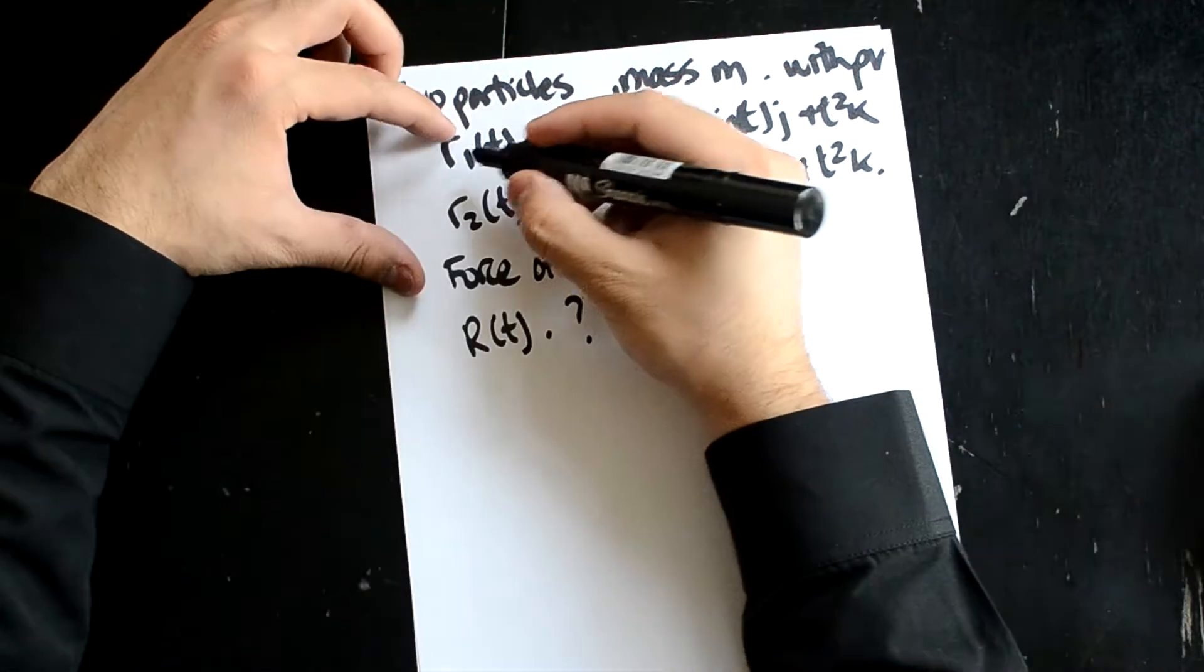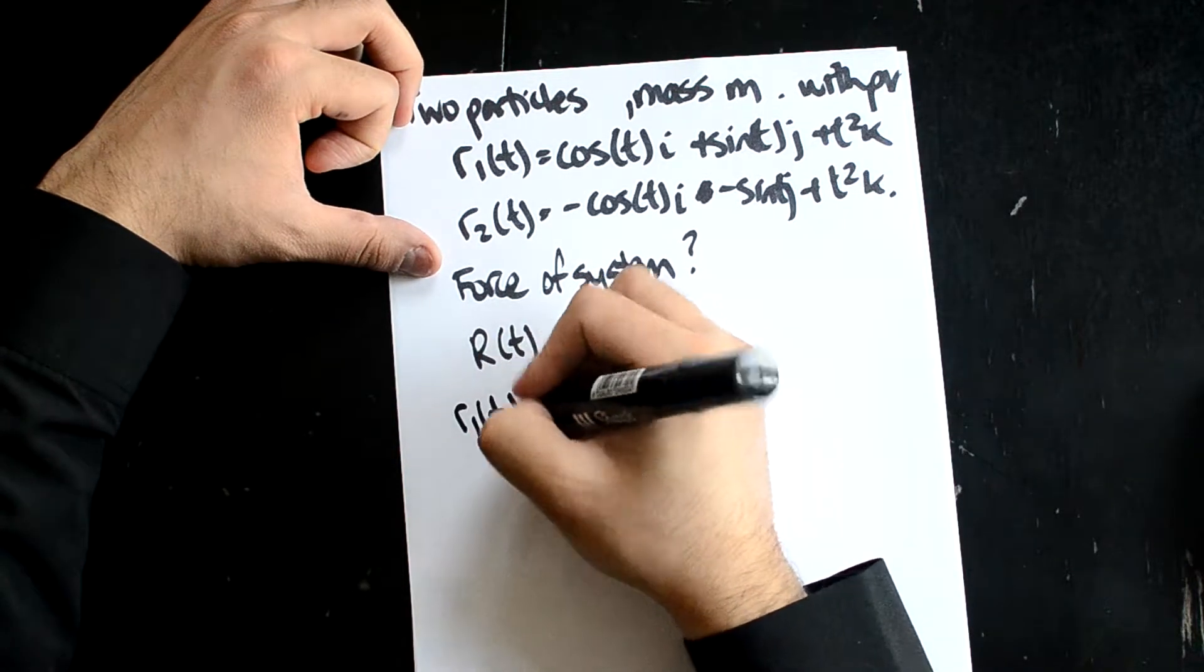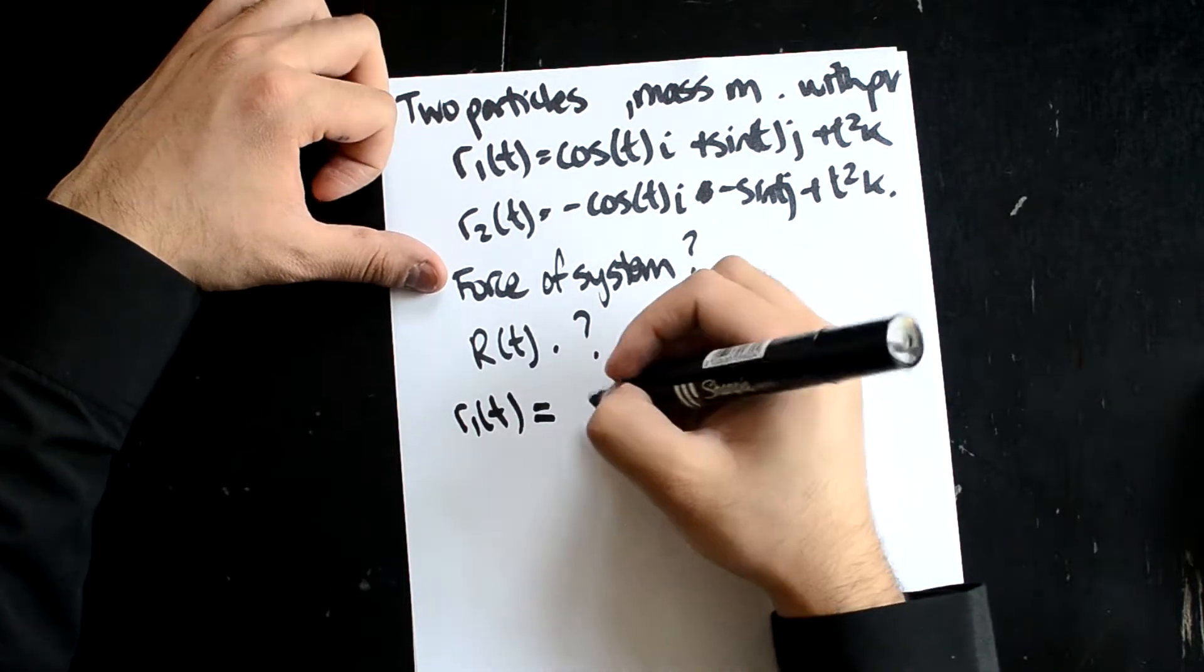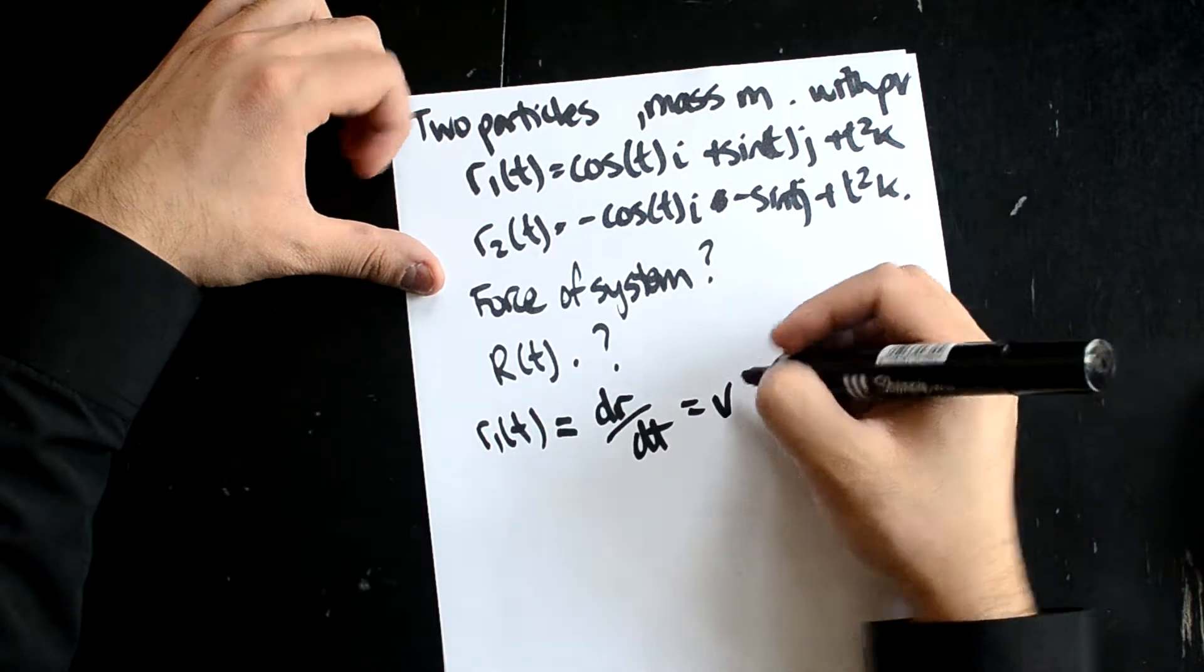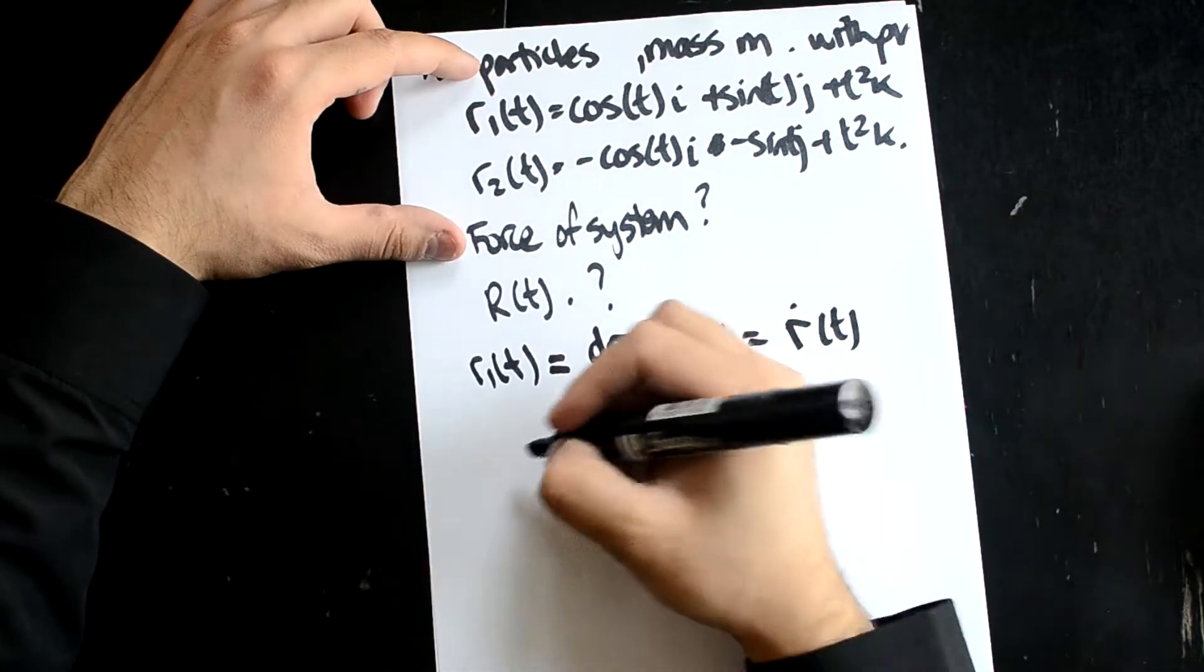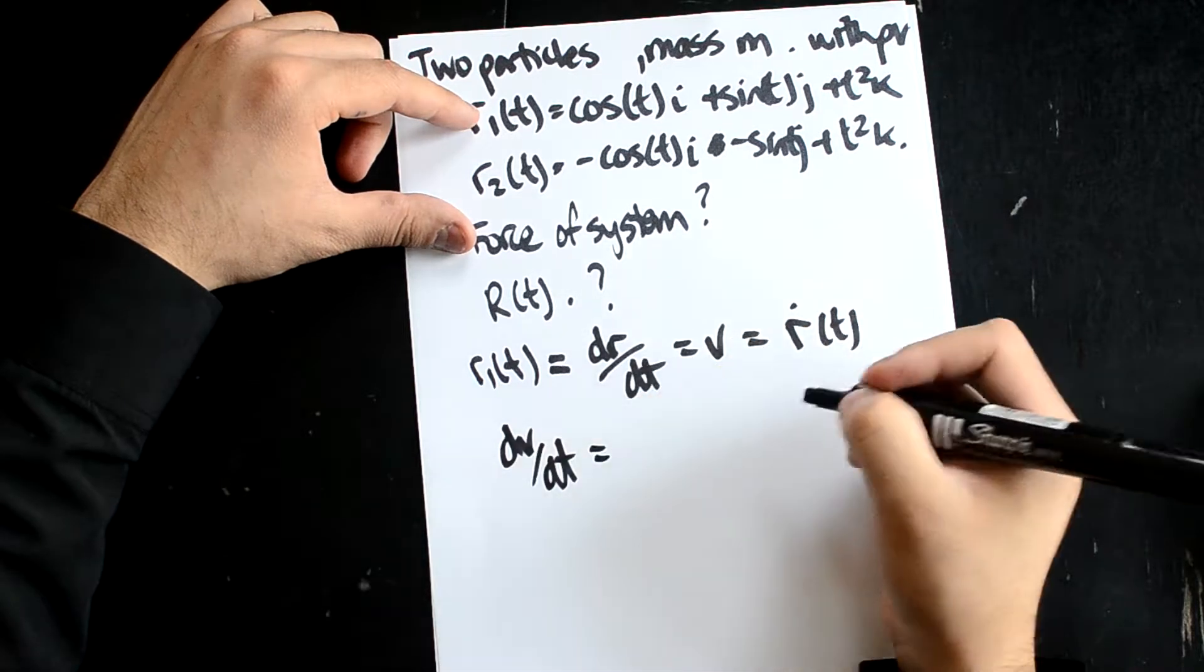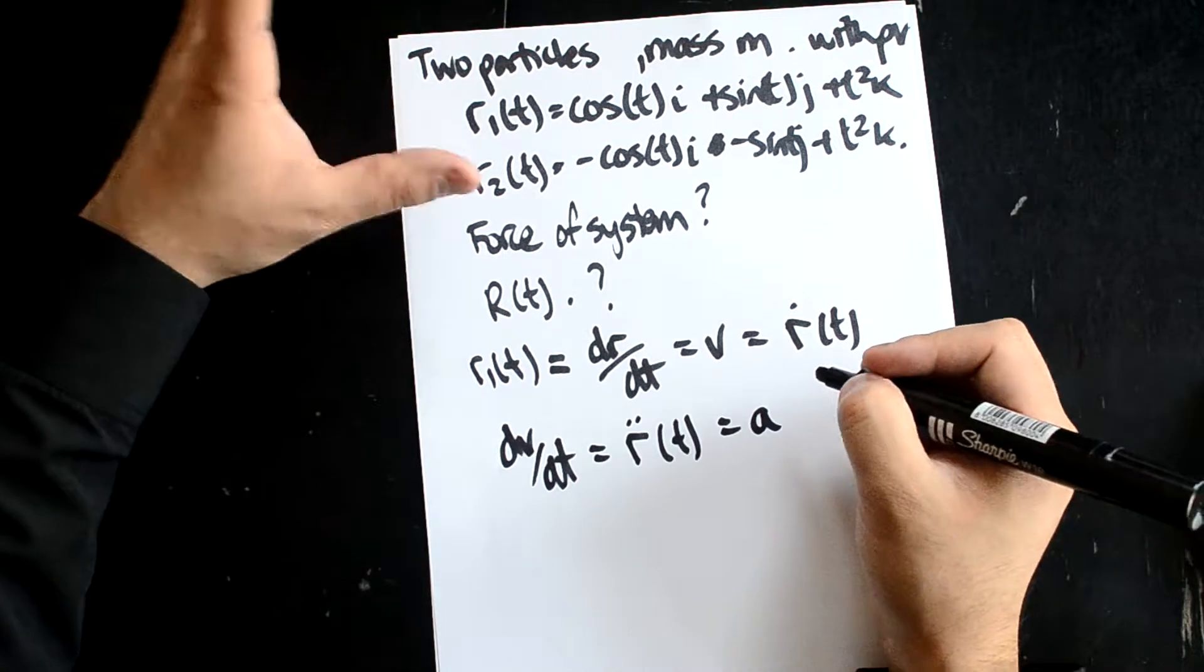So firstly, we have R1 over here and R2. So we know that you have R1(t) could also be, when differentiated, dr/dt to equal V, which is also written as r dot t. But then let's say we want to differentiate the differential of this. So we get dv/dt, that means have r dot dot t, which equals a. So that's what we're going to do.